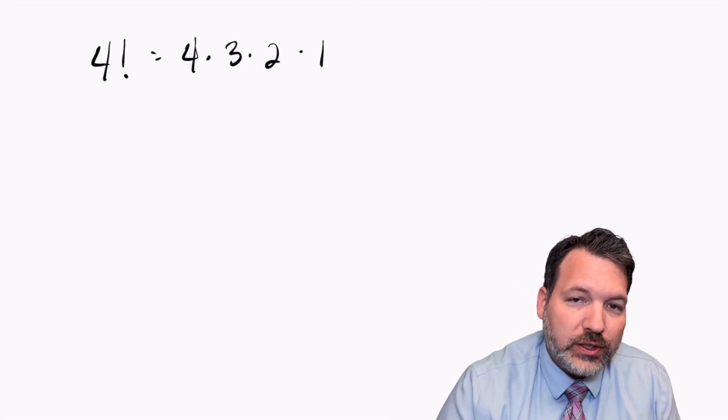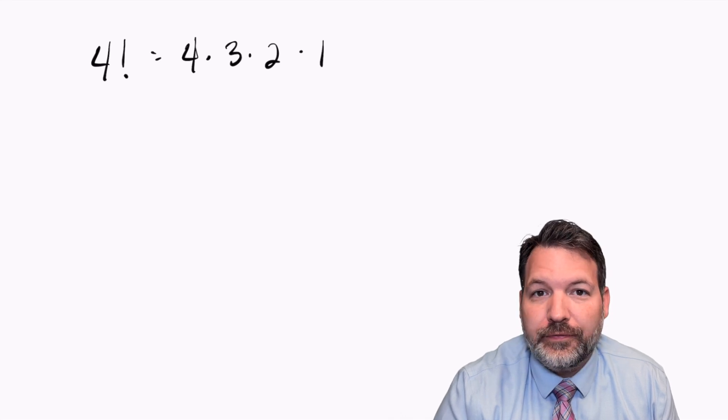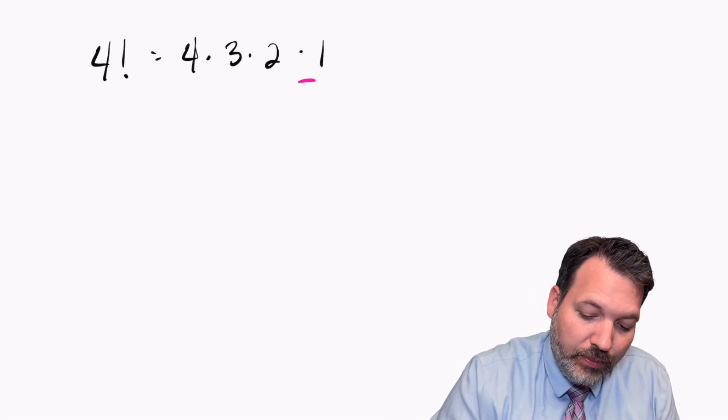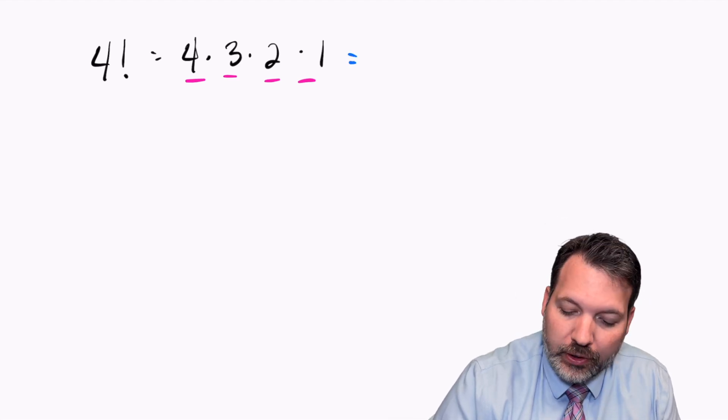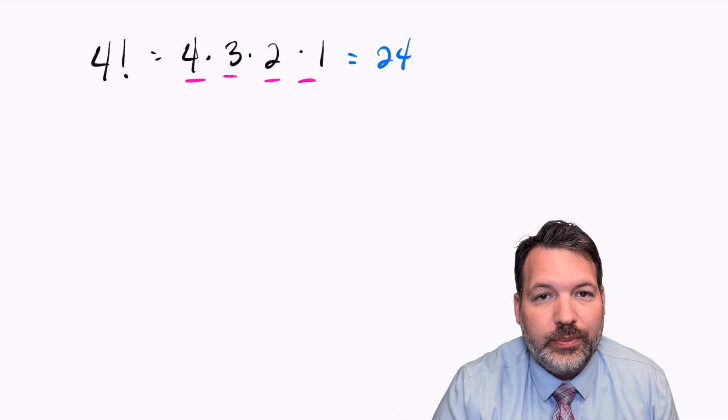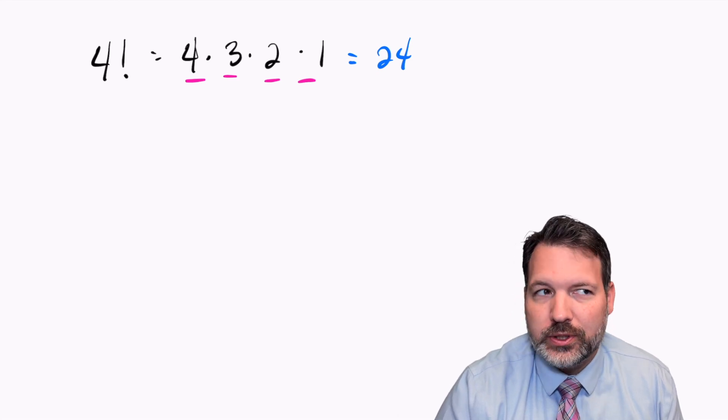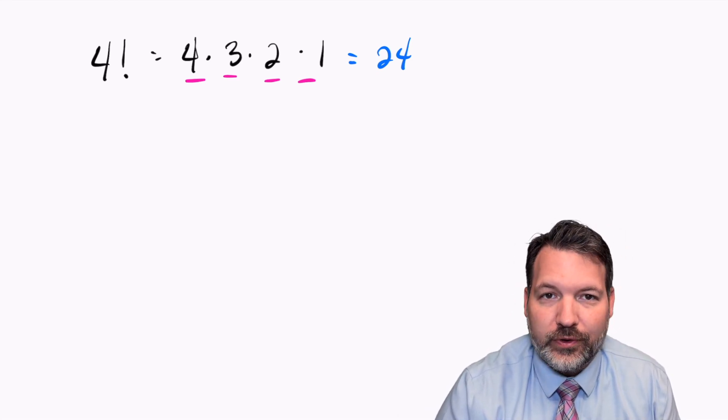The beautiful thing about a factorial is they have lots of factors. Specifically, in this case, we must have at least the factors 1, 2, 3, and 4. Now, 4 factorial, if you actually multiply it out, happens to be 24. That's not super important to us, but just kind of leave that off to the side for the moment.